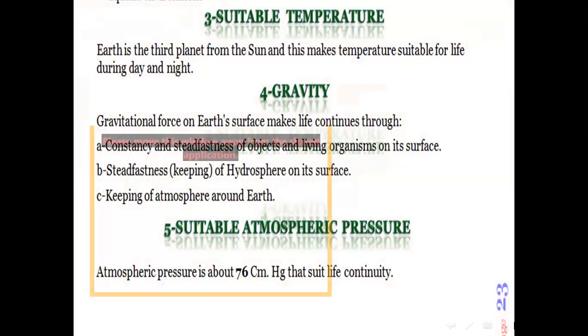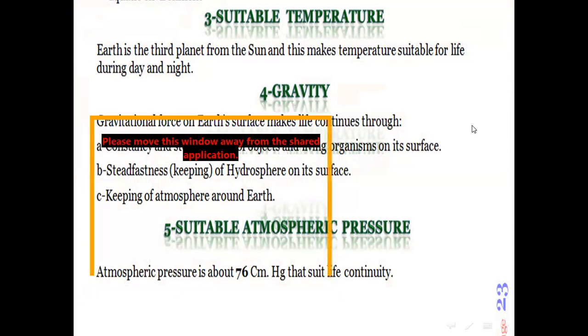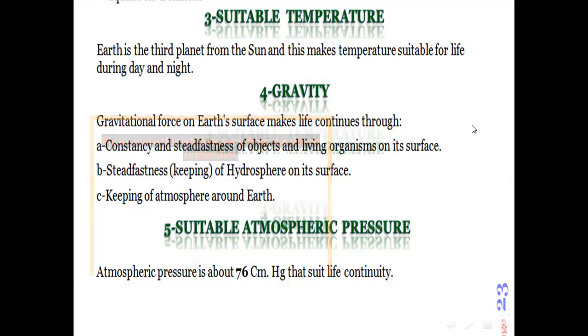Number three: suitable temperature. From the conditions which make life suitable on planet Earth are suitable hydrosphere, suitable atmosphere, and suitable temperature. Earth is the third planet away from the Sun, and that makes the temperature moderate during the daytime and during the nighttime.